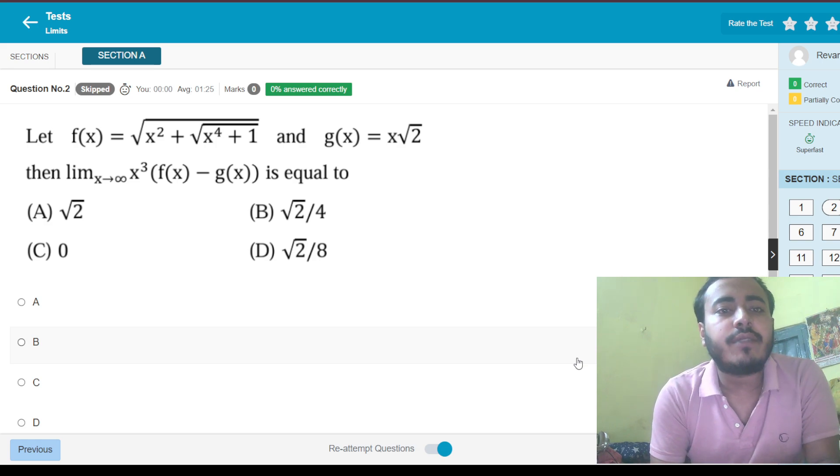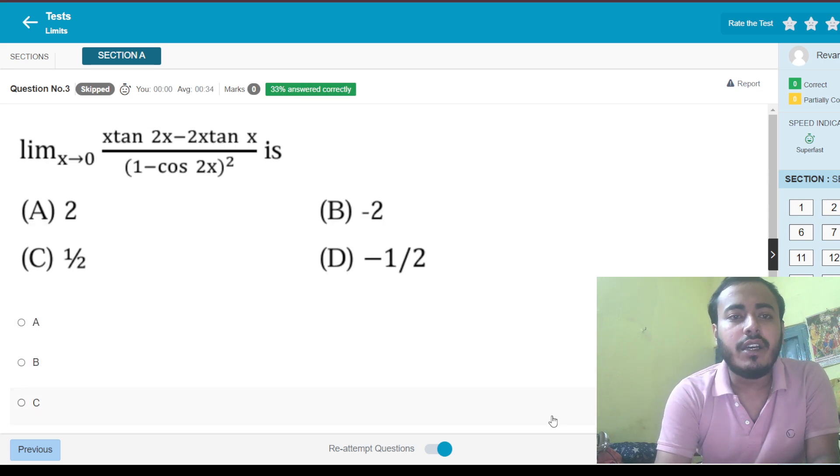Let's say this f(x) minus g(x) type of thing where x tends to infinity. Very important: you always rationalize this thing. You multiply with the conjugate of this, which means you multiply with root of x squared plus root of x to the power 4 plus 1 plus x root 2 up and down. Below you got that thing, f(x) plus g(x). In the numerator, a squared minus b squared formula would be applied, which means it would be x squared minus 2x squared plus root of x to the power 4 plus 1. I can do it mentally, but I would prefer not to. I would simply skip to the next question.